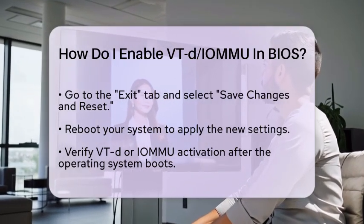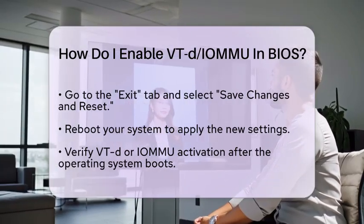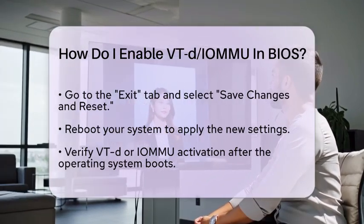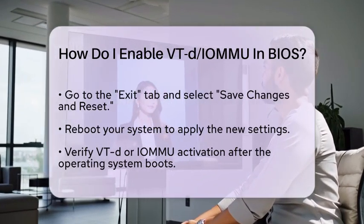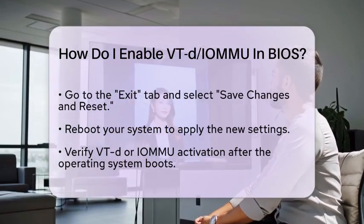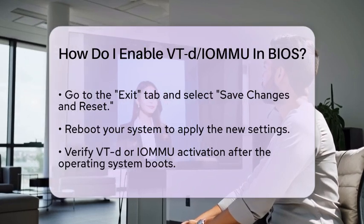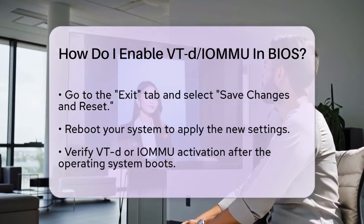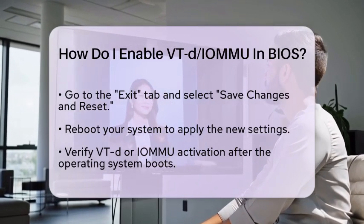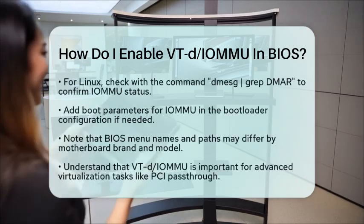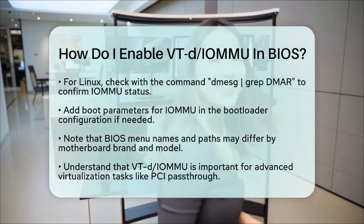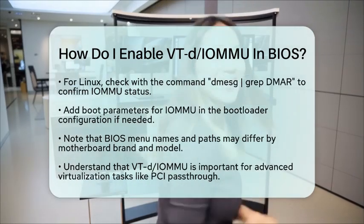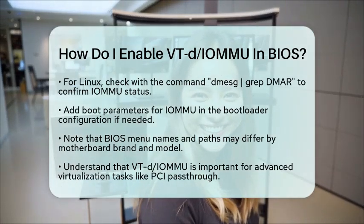Once your operating system has booted up, you can verify that VT-d or IOMMU is active. If you are using a Linux operating system, you can check the kernel messages by using the command dmesg | grep dmar. This will confirm whether IOMMU is enabled. Additionally, ensure that your kernel is set up to use IOMMU by adding parameters like intel_iommu=on for Intel processors, or iommu=pt for AMD processors, to your bootloader configuration.